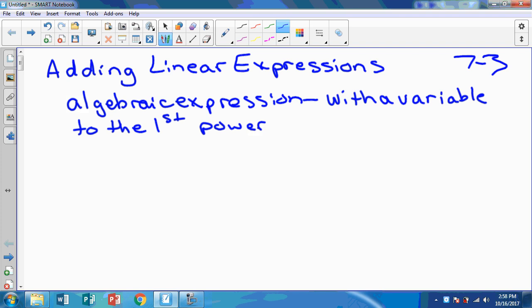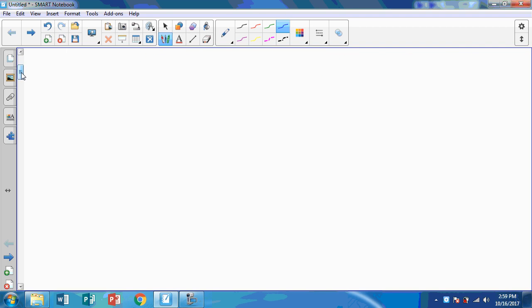We don't write the power. So if we have like n plus 3, that's really n to the first plus 3, but we're not going to write that. Or we may have 5y minus 7, that's another algebraic expression. We don't have an exponent with that variable y. So what we're going to be doing here is we're just going to be adding them. So I'm going to give you some examples. The secret word today is journal.